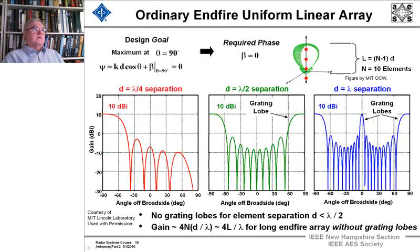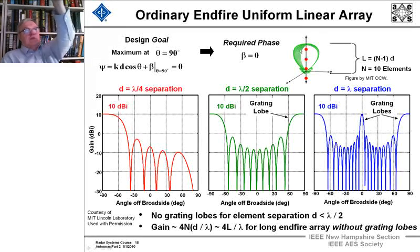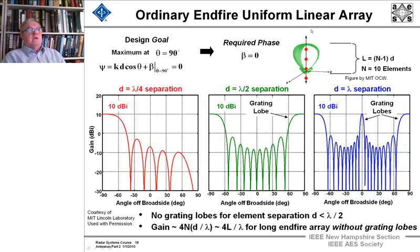Now when we go to the term end fire, which means we shift the phase and the separation so that all of the, so that we're looking down completely down the end of the array and point the antenna in that direction with lambda over 4 separation, we're just fine.